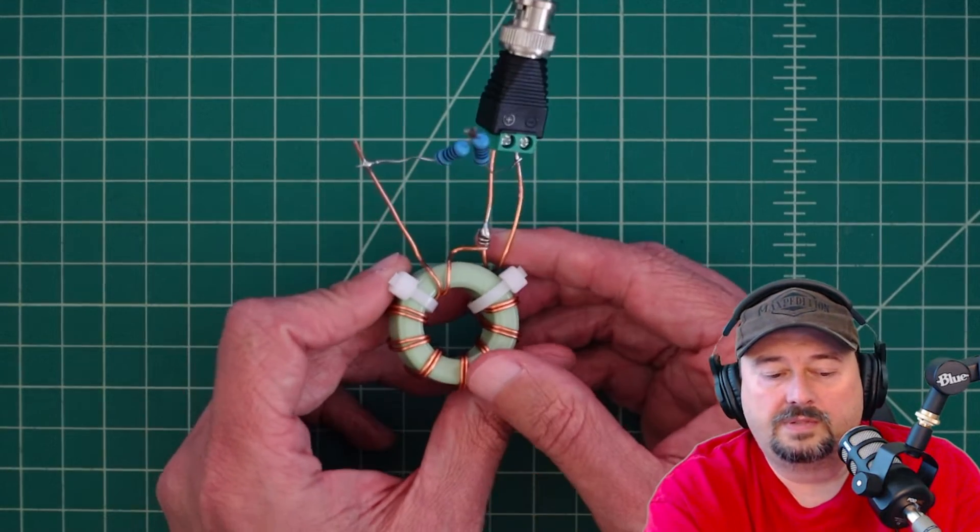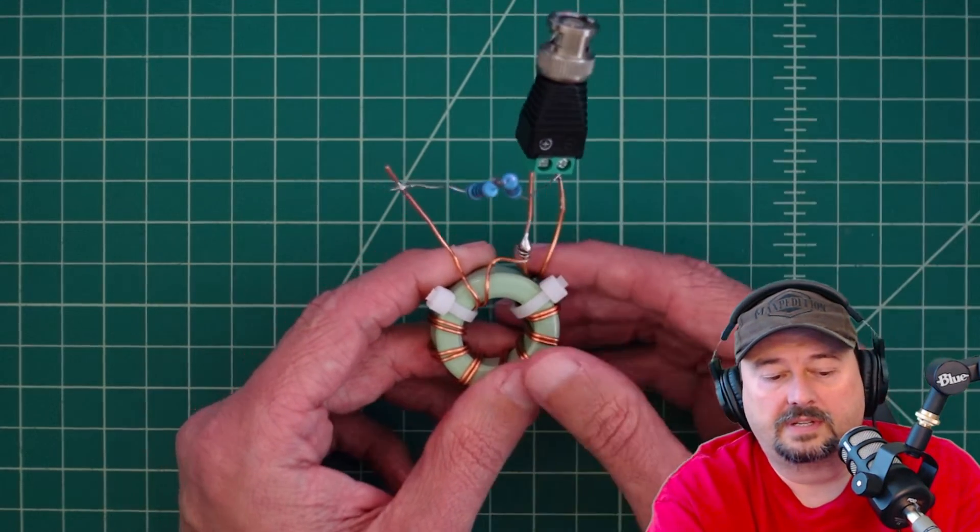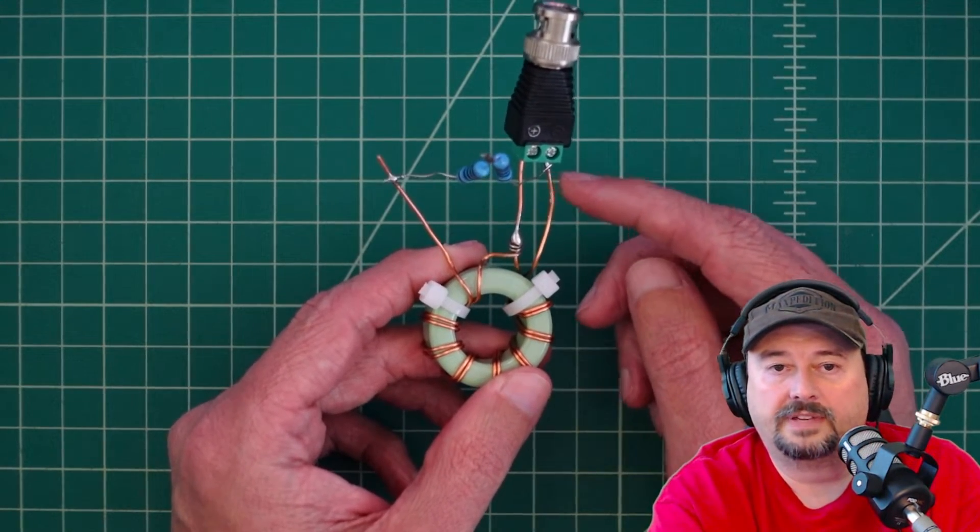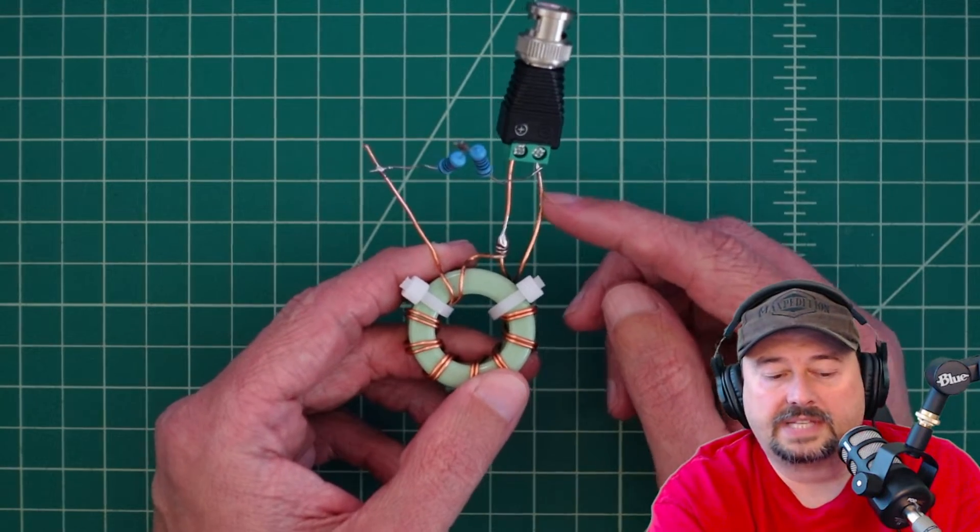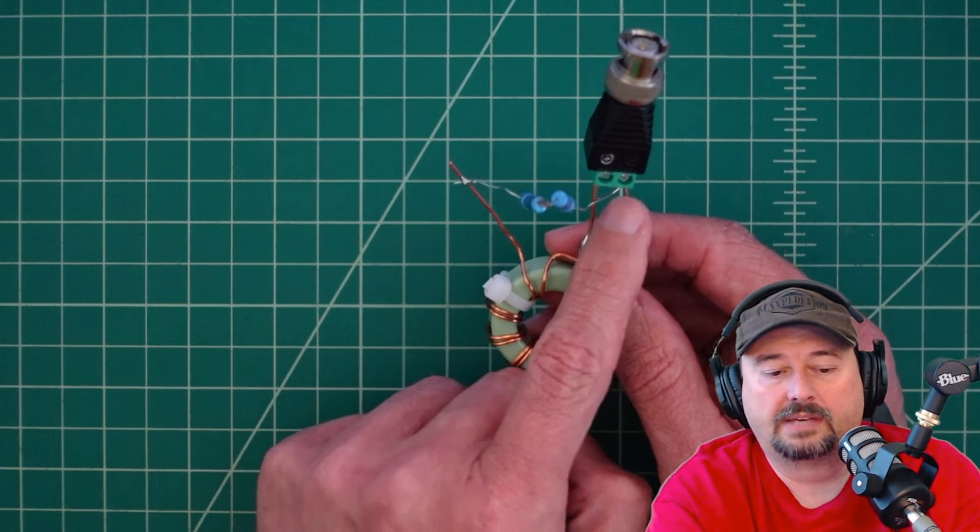Now when we use this in an antenna we would connect a counterpoise to this. Or maybe we're using an off-center fed dipole. But our ground leg would come off of here, off of the shield side. So we would tap that and then connect our counterpoise.